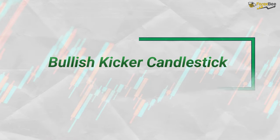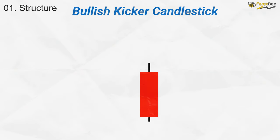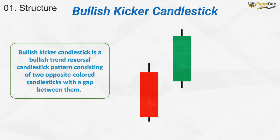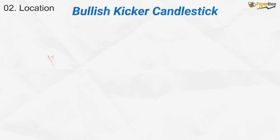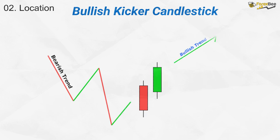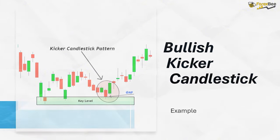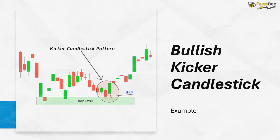Now, let's talk about the bullish kicker candlestick pattern. Its structure consists of two key candles. The first is a large bearish candle showing strong selling pressure, followed by a bullish candle that opens with a significant gap up and closes higher, completely reversing the previous bearish sentiment. The second candle's sharp change in direction signals a sudden shift in market sentiment. This pattern typically forms at the end of a downtrend, and in the example, a bullish kicker forms after a strong downtrend, with the gap up and bullish close indicating a powerful change in momentum signaling the start of a new bullish trend.